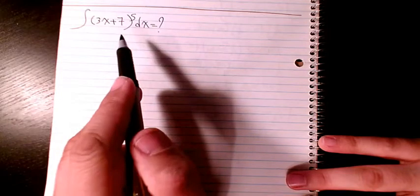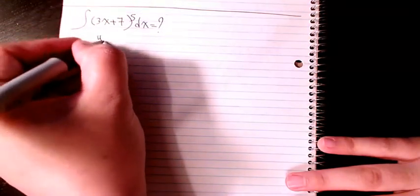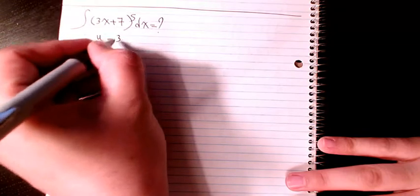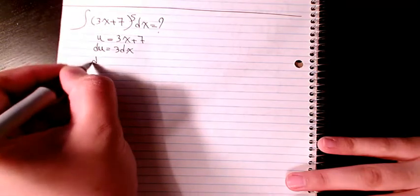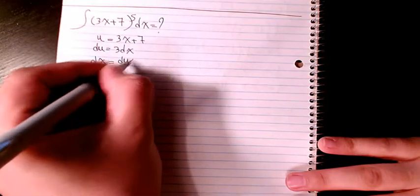I use integration by substitution. I consider u as 3x plus 7. So du will be 3 dx, which means that dx is du over 3.